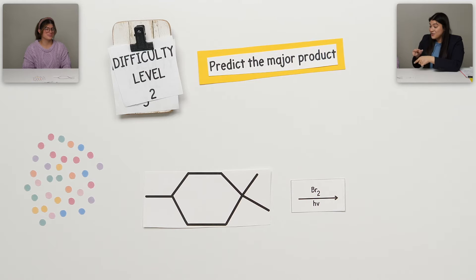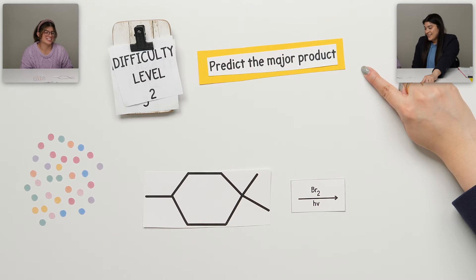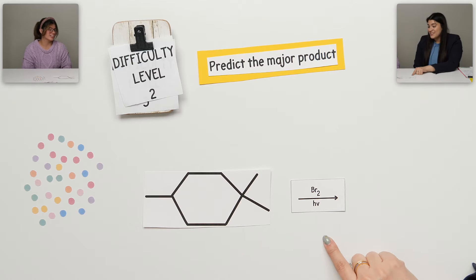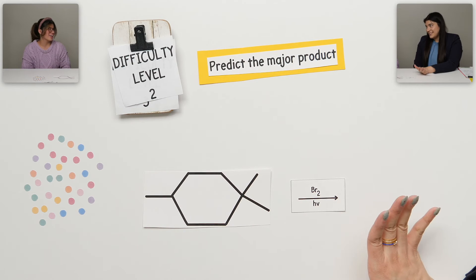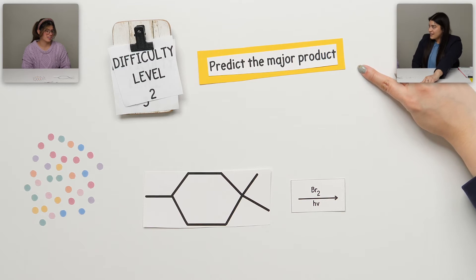Off to a great start. So, moving up to difficulty level two, we're going to predict the major product. And remember, with radicals, there are several possibilities. However, we still go back to what we just looked at, stability, picking what was going to be the most stable. And that's going to define what our major product is.